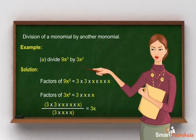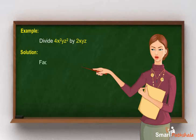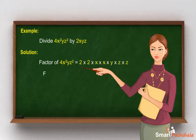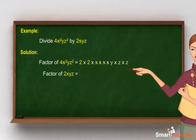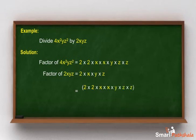Let us solve another example. Divide 4x squared yz squared by 2xyz. Solution: let's find out the factors of both terms. Factor of 4x squared yz squared is equal to 2 × 2 × x × x × y × z × z. Factor of 2xyz is equal to 2 × x × y × z. Now divide the factors: 2 × 2 × x × x × y × z × z divided by 2 × x × y × z is equal to 2xz.